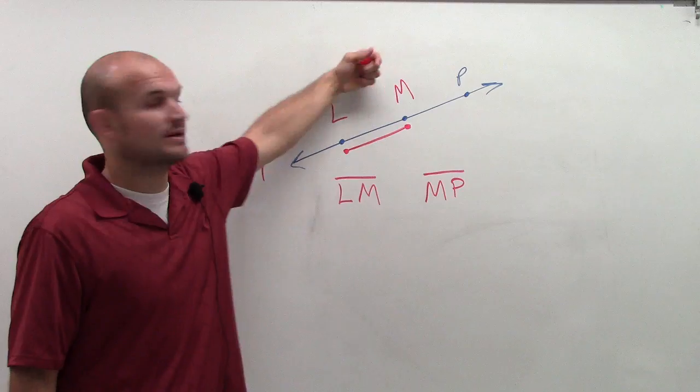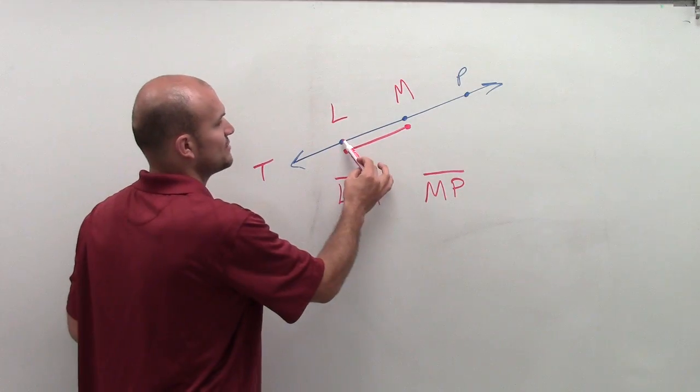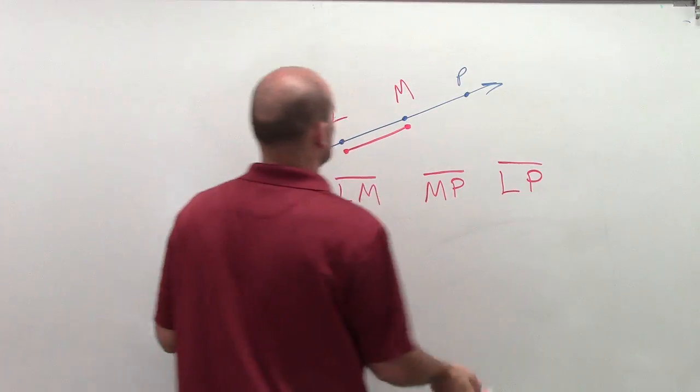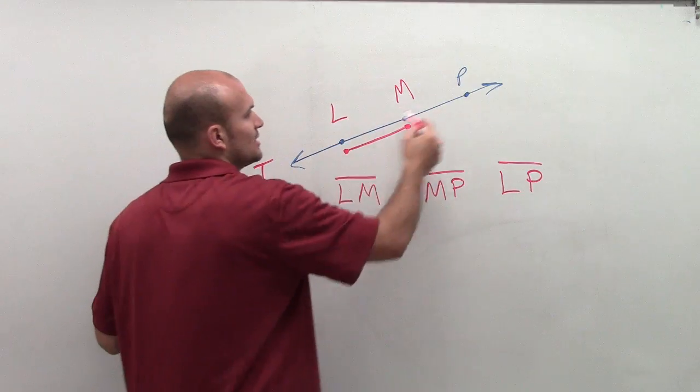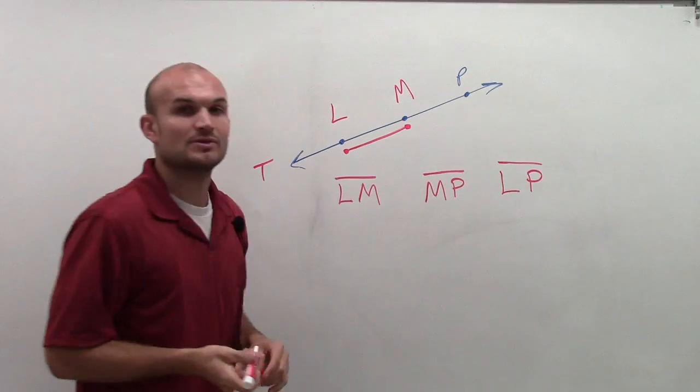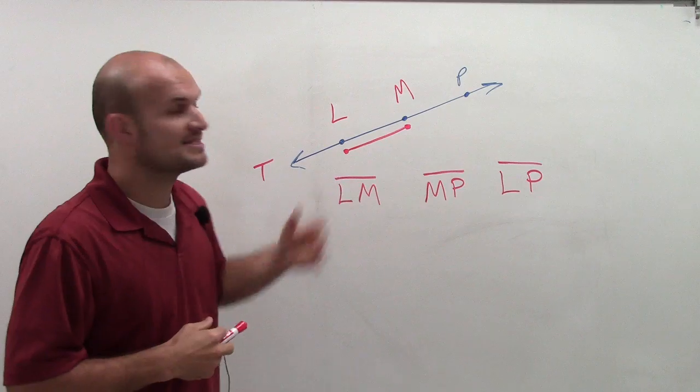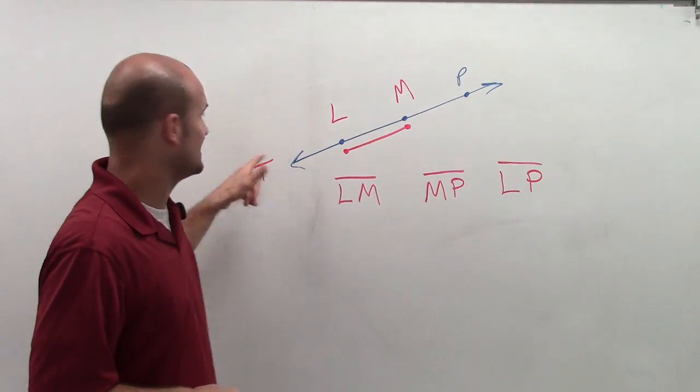There's also a third segment we could write. We could draw a segment between the points L and P, where the two endpoints would be L and P. So there you go, there are three examples of segments on this line T.